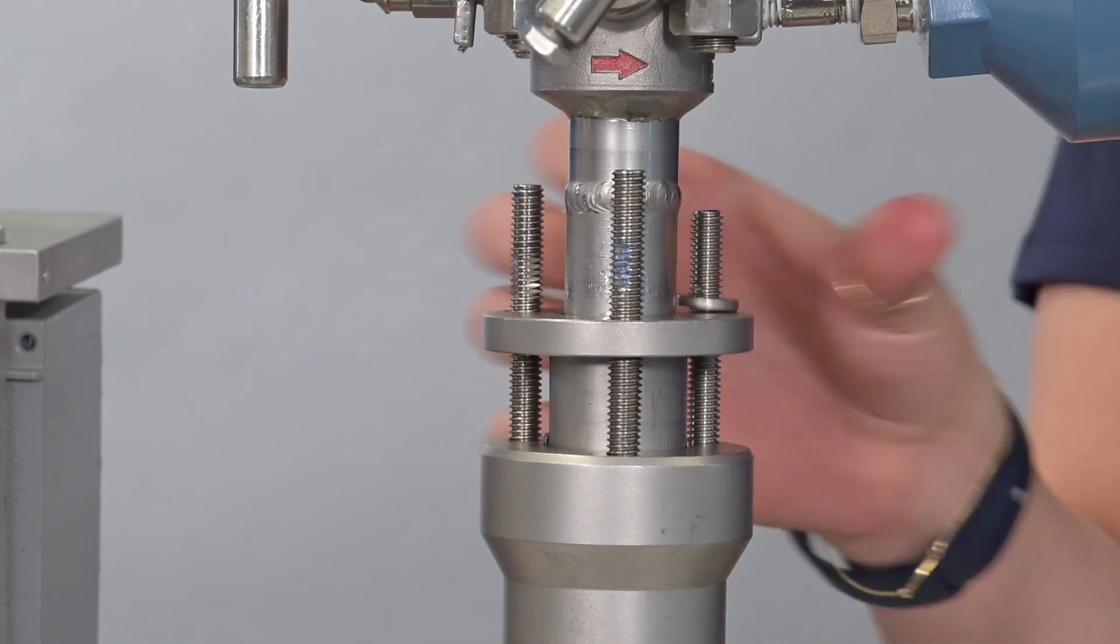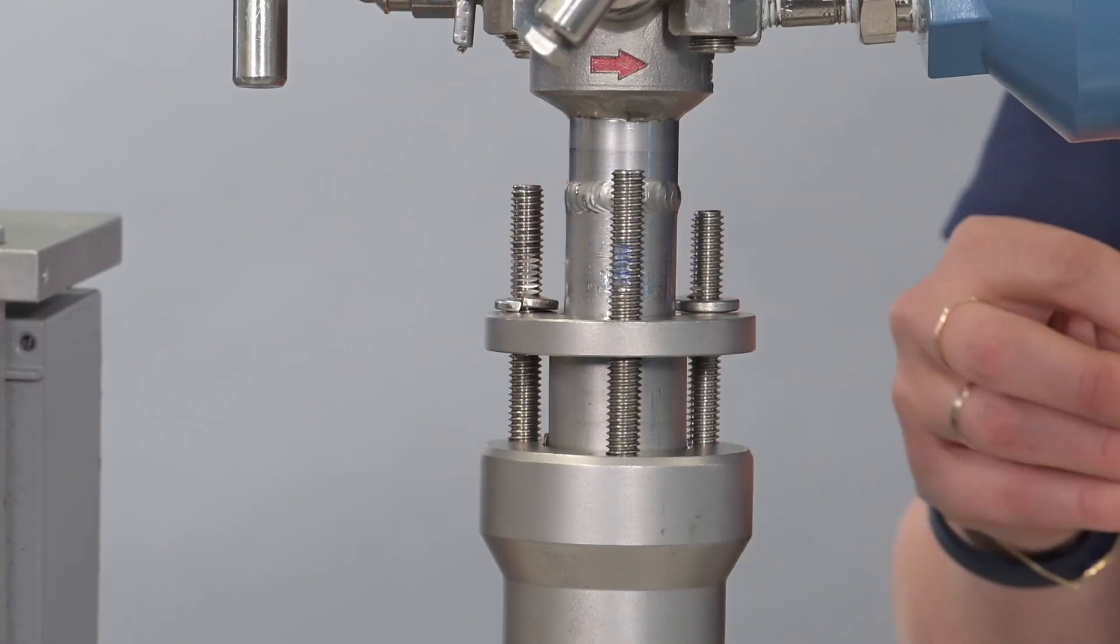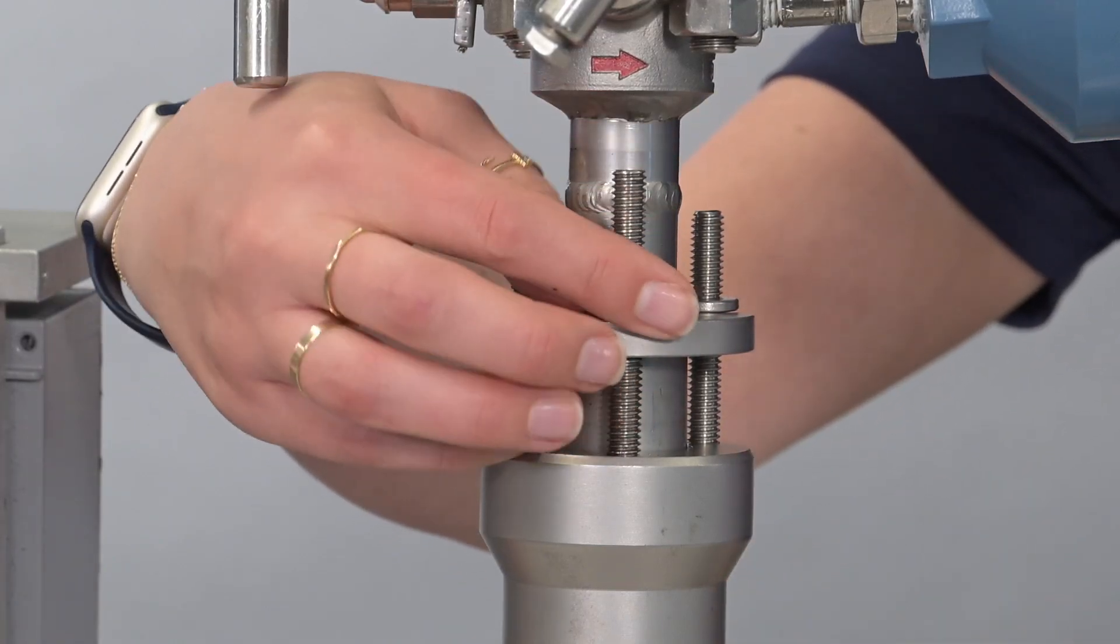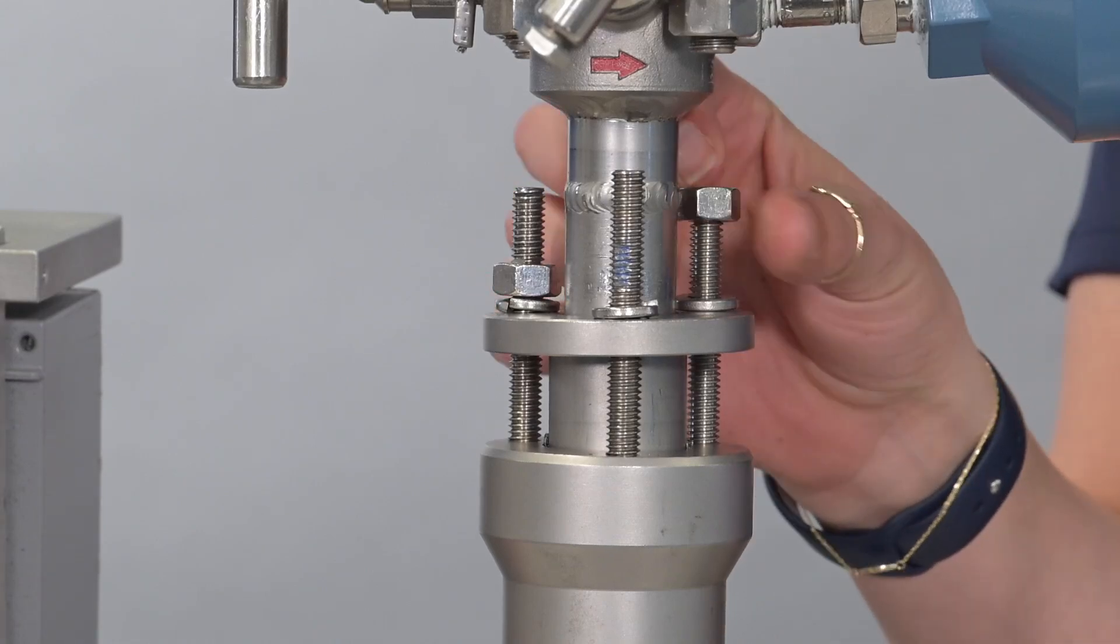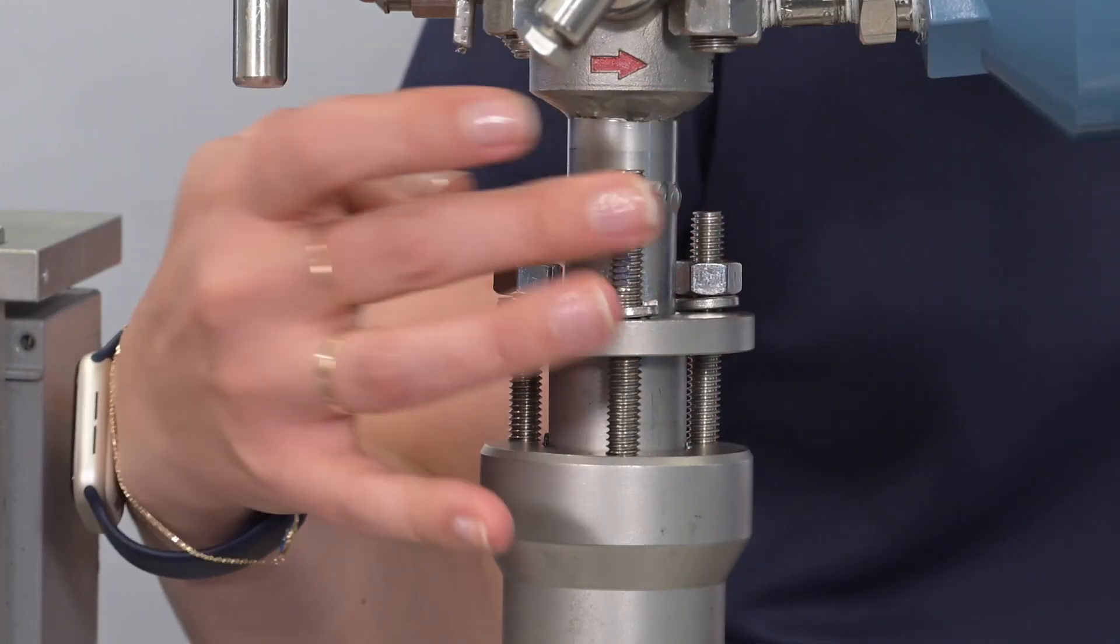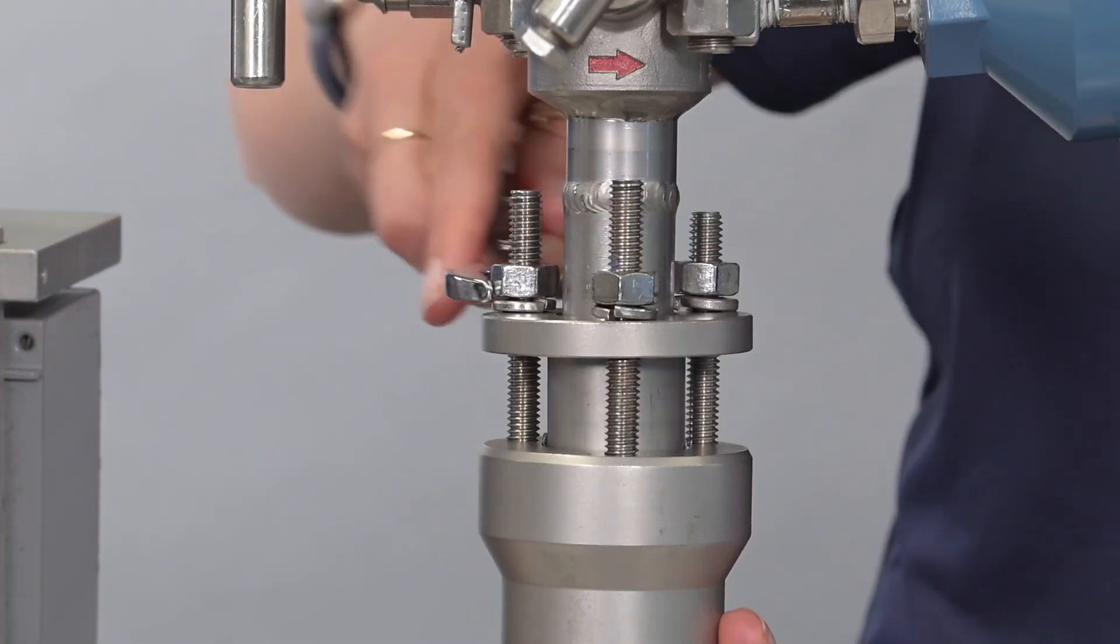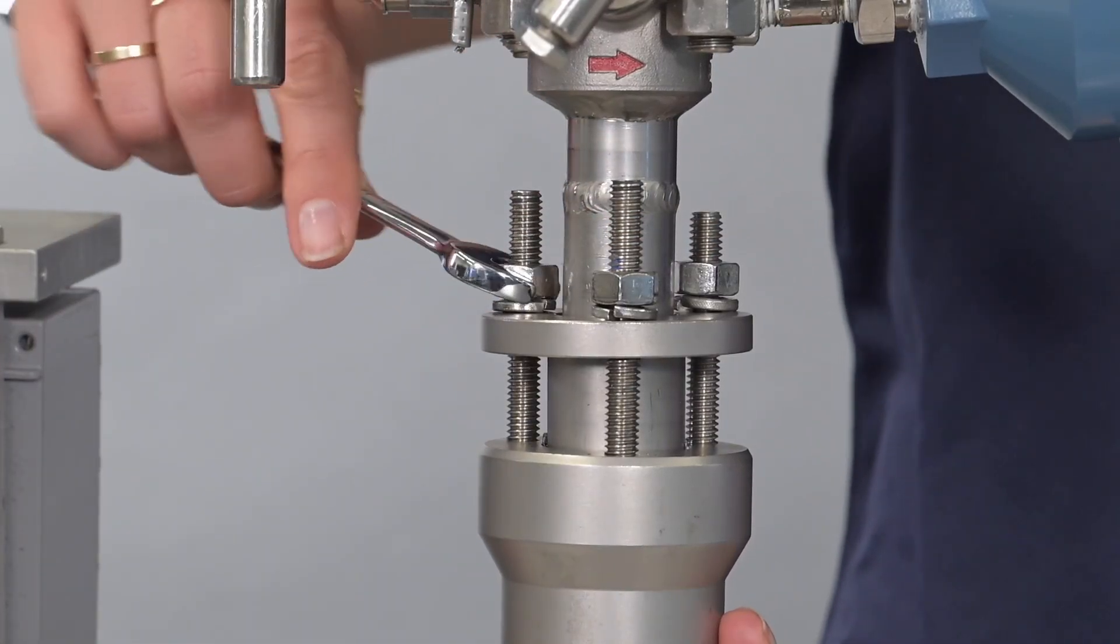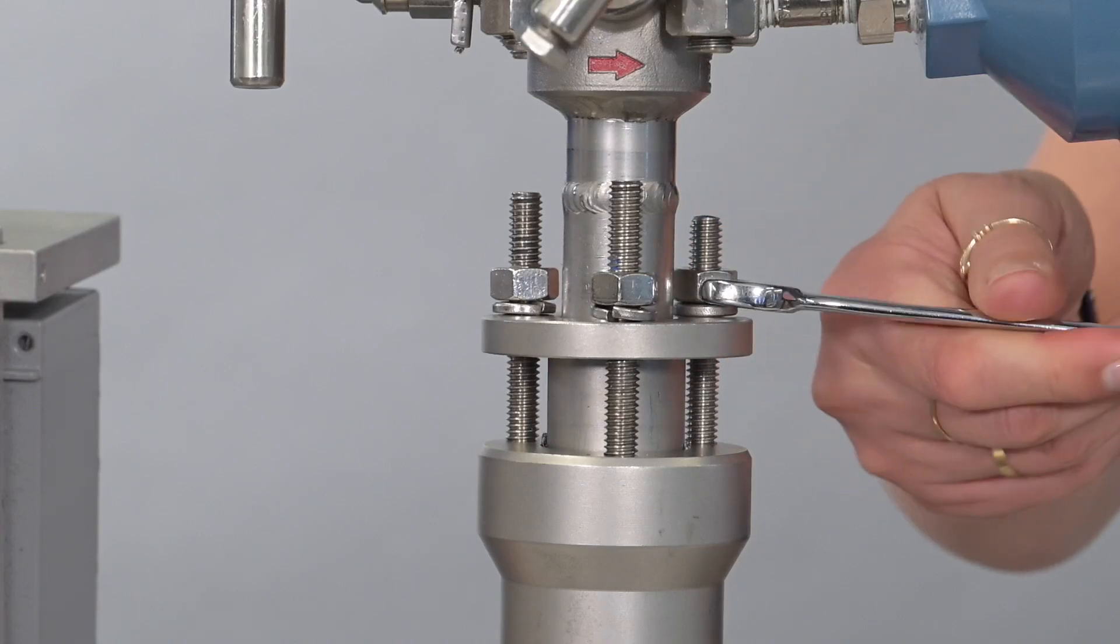Lower the follower and install the three split ring lock washers on the pack lock studs as shown. Thread on the three nuts. Use a straight edge to ensure alignment with the pipe. Use a 9 16ths or 14 millimeter wrench to tighten the nuts evenly until the washers are flat.